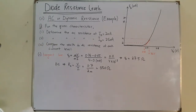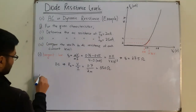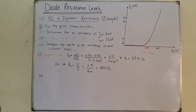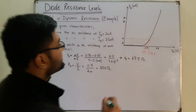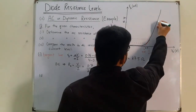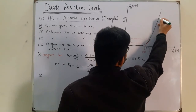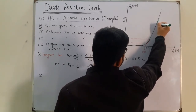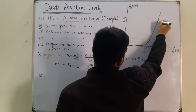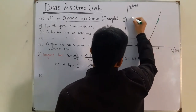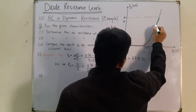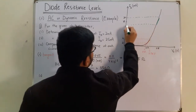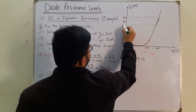Now part two. This is required at a level of 25 milliampere. At 25 milliampere we draw a tangent line. The maximum value on the tangent represents 30 and the minimum represents 20.